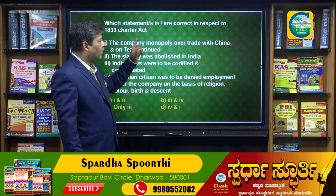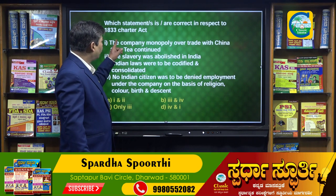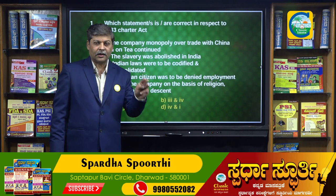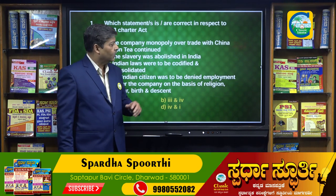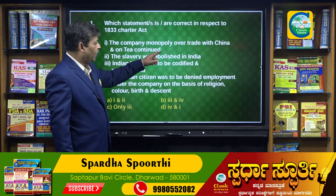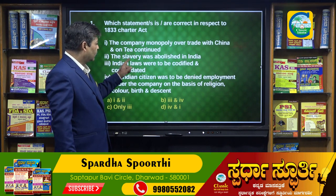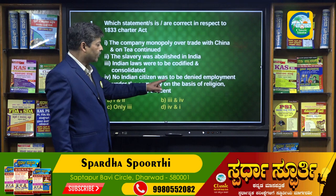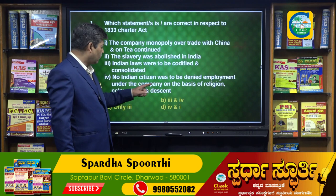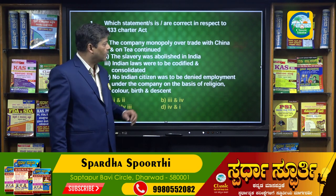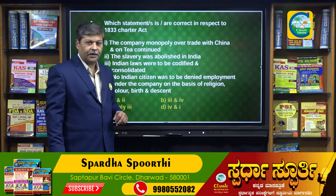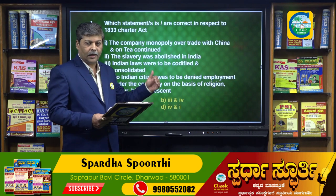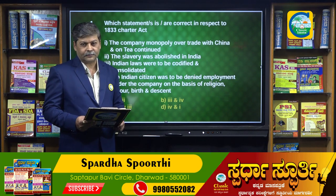The first question: which statement or statements is or are correct in respect of the 1833 Charter Act? The Charter Acts of 1813, 1833, and 1853 are very important. The statements given are: (1) the company monopoly over trade with China and on tea continued; (2) slavery was abolished in India; (3) Indian laws were to be codified and consolidated; (4) no Indian citizen was to be denied employment under the company on the basis of religion, color, birth, and descent.